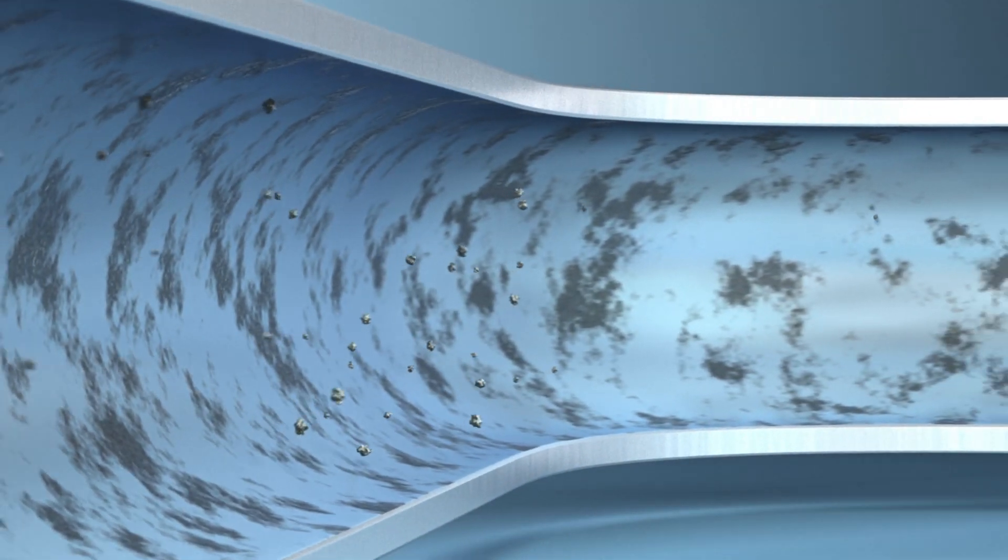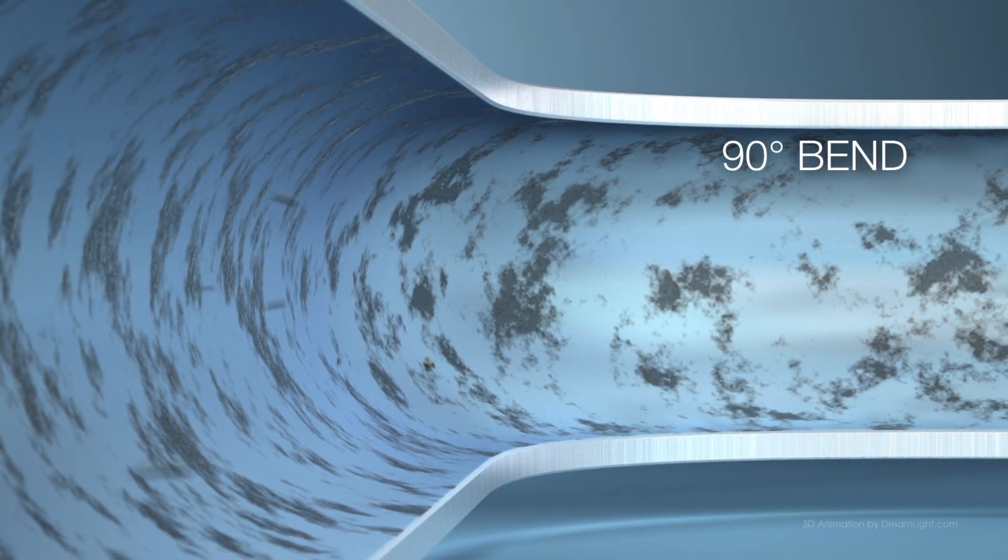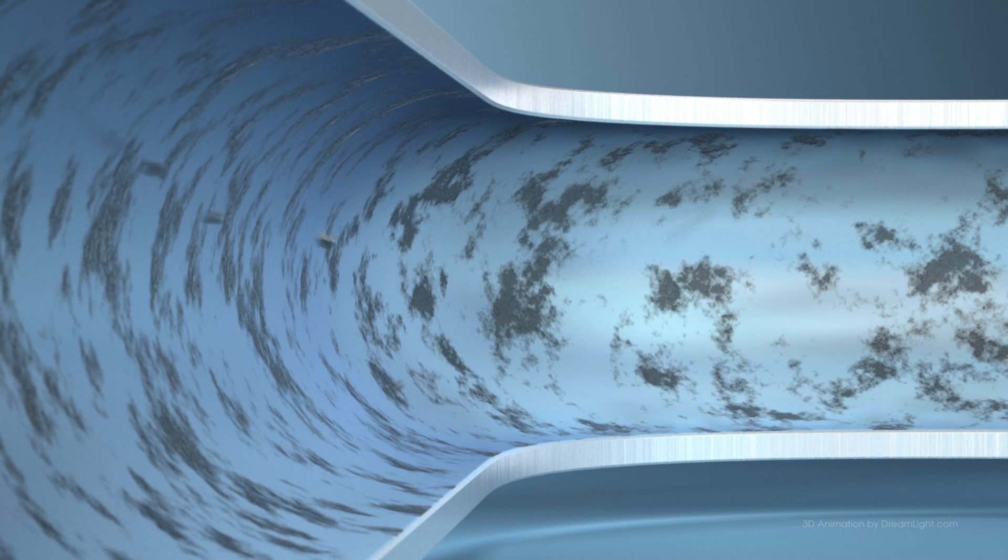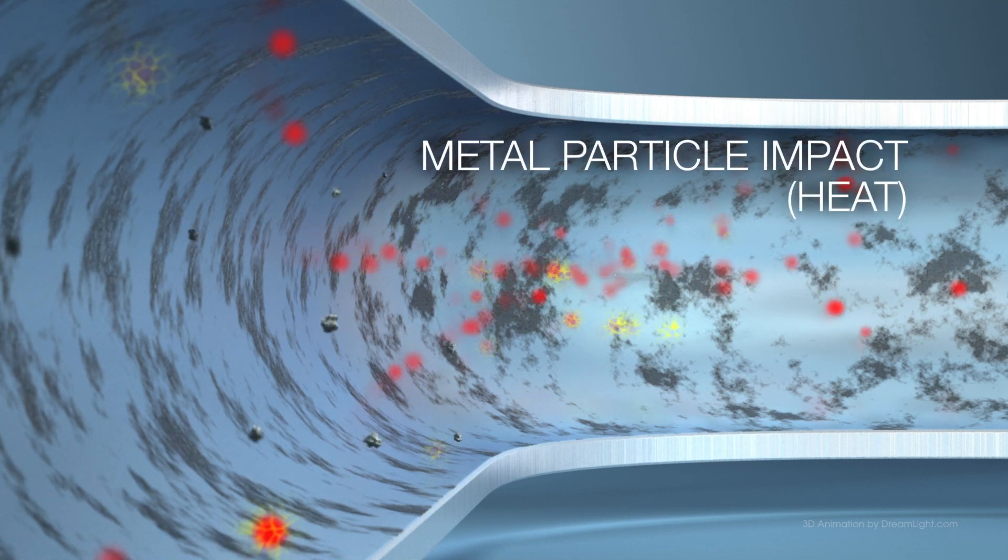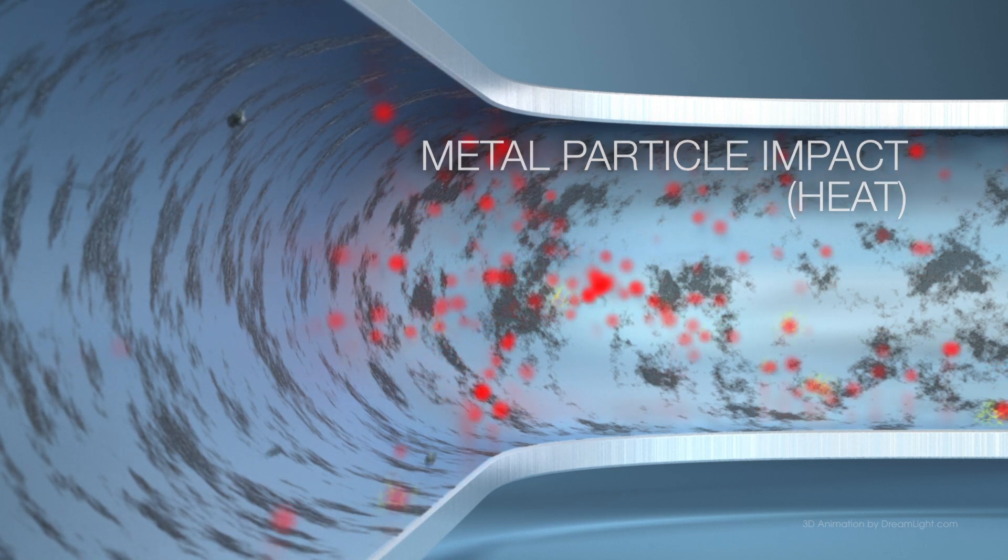Particles may travel at the same velocity as the service media. Bends in tubing or piping create a sudden change in direction where particles can impact the wall as they are being propelled by the service media. With sufficient kinetic energy, particle impacts may generate enough heat to create sparks.